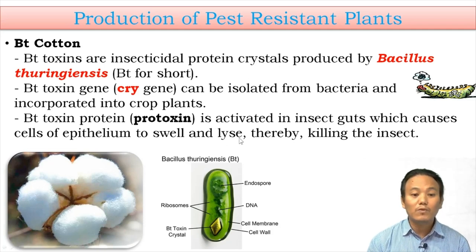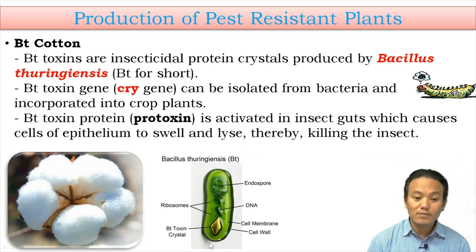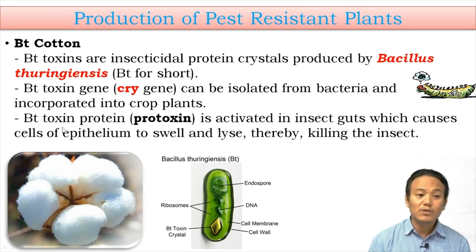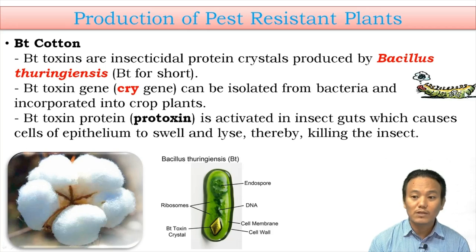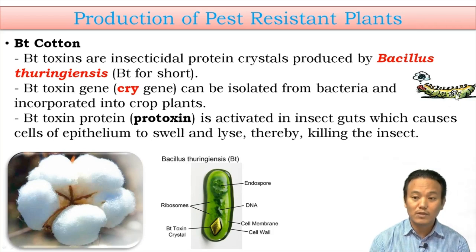An important question from your textbook is: why doesn't the Bt toxin crystal kill the bacteria itself — why does it kill only the caterpillar? That is because the Bt toxin protein is called a protoxin — it is not yet active and requires activation. Activation of Bt toxin happens within the insect gut due to the alkaline nature of the insect's gut environment. When activated, the active protein causes the cells of the gut epithelium of the insect to swell and lyse, thereby killing the insect.